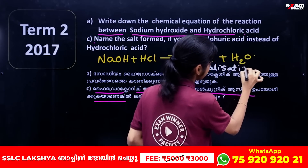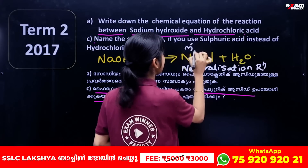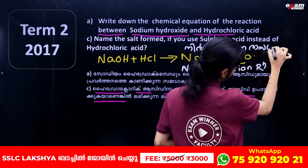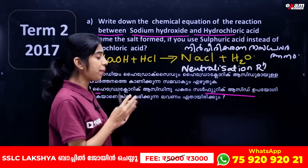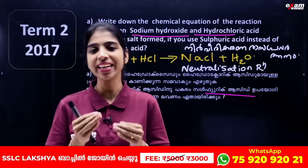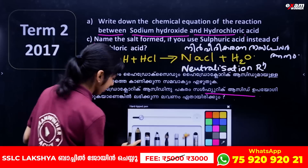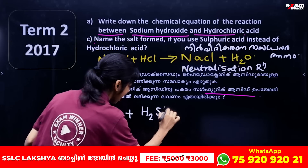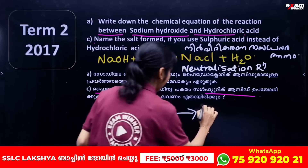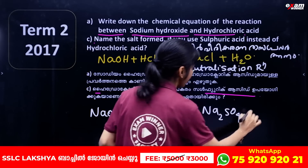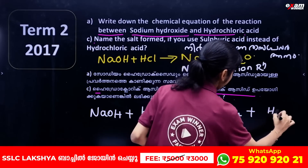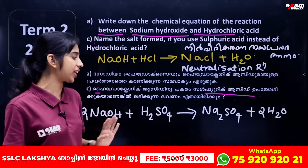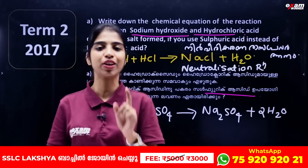Neutralization reaction: NaOH + HCl gives sodium chloride and water. If we use sulfuric acid instead, then 2NaOH + H₂SO₄ gives Na₂SO₄ + 2H₂O.